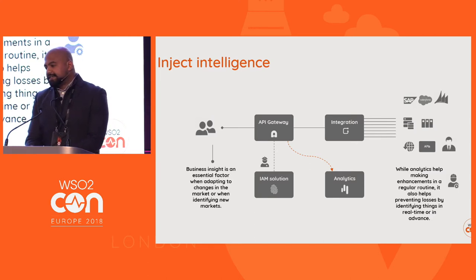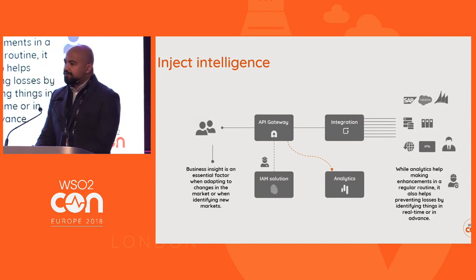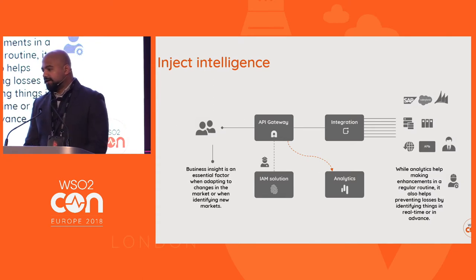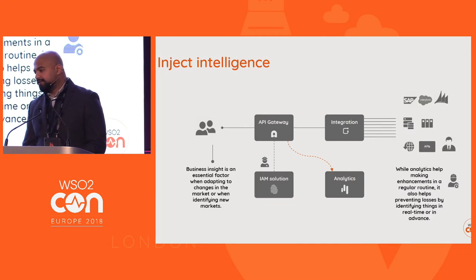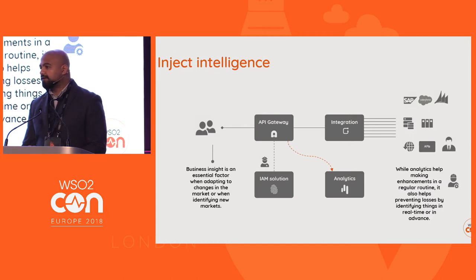This is how you inject intelligence into the solution. API usage-related information is published into an analytics component. Based on usage patterns or raw data about API usage, you can define your own metrics to analyze market trends or perform audits over the requests and responses that have passed through the gateway.